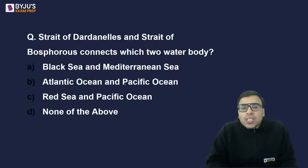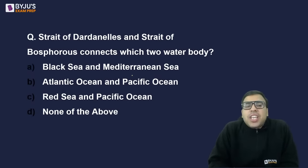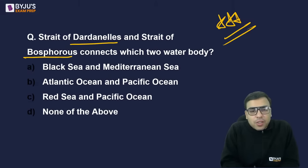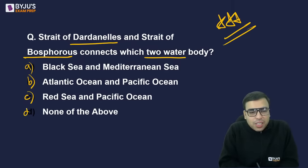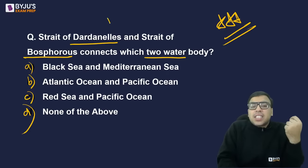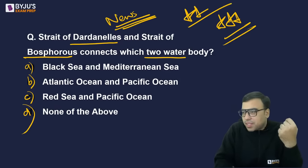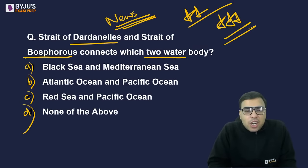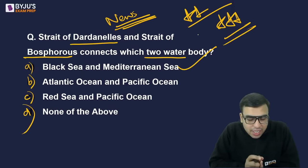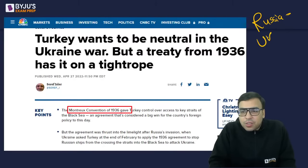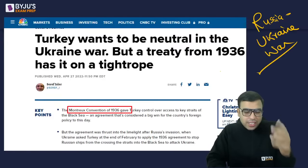Now let's move on to another question. The Strait of Dardanelles and Strait of Bosphorus connect which two water bodies? Options: Black Sea and Mediterranean Sea, Atlantic Ocean, Pacific Ocean, Red Sea and Pacific Ocean, or None of the Above. The right answer is A — the Strait of Dardanelles and the Bosphorus Strait connect the Mediterranean Sea and the Black Sea. Since the Russia-Ukraine war, these two straits have been very much in the news.